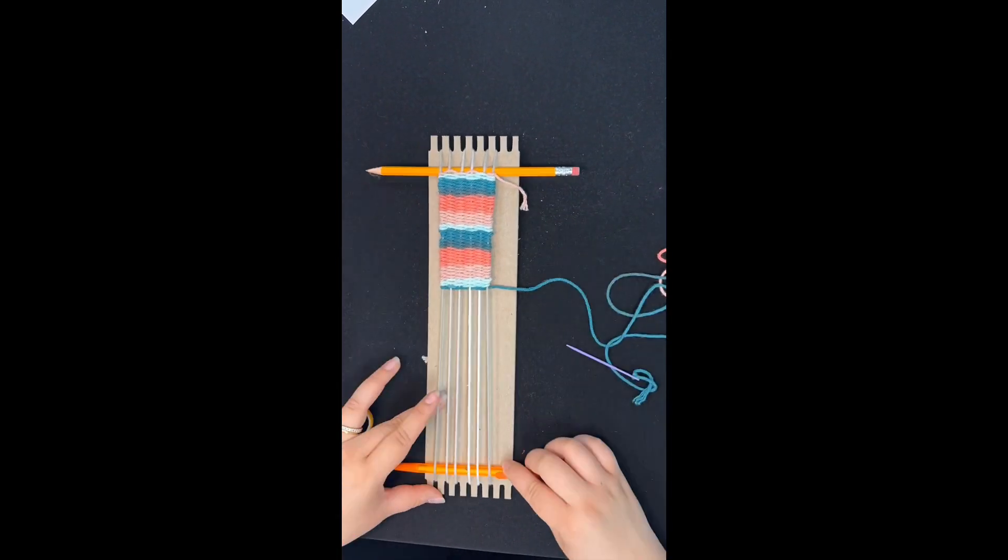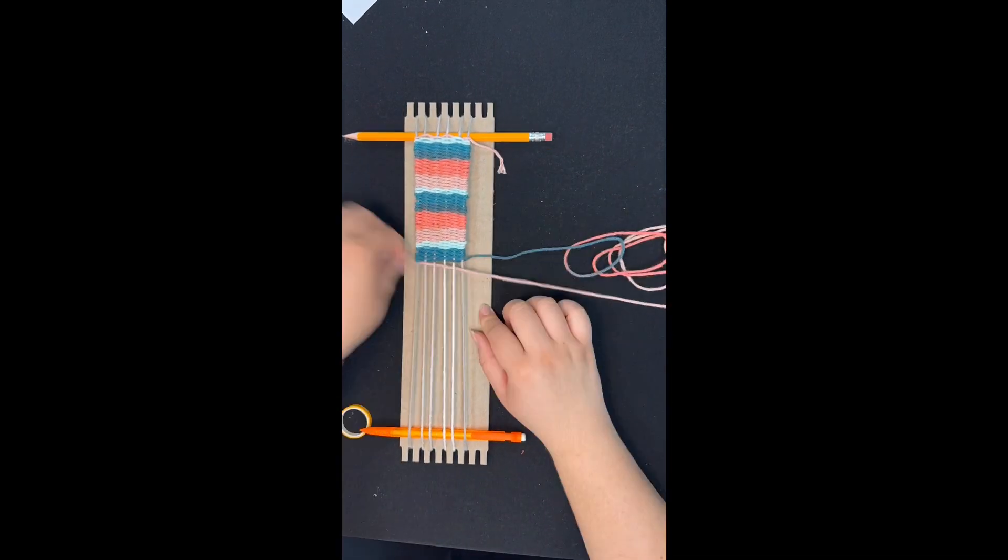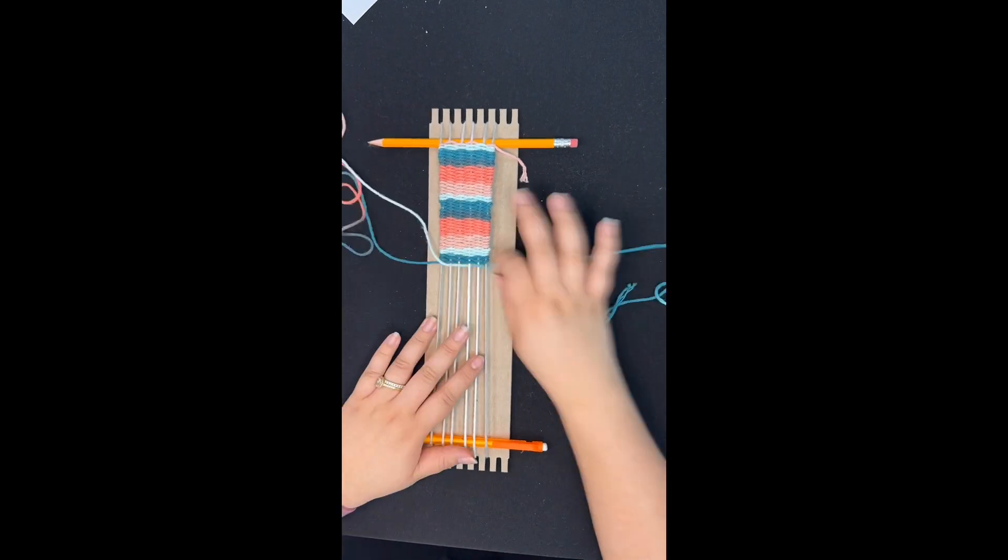Right under the halfway mark, I went ahead and put a pencil at the bottom part of the loom to ensure that the loom was still tight enough for me to weave.